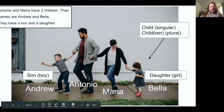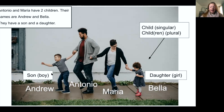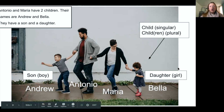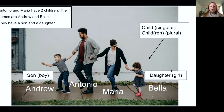Andrew is a boy, so he is their son. Bella is a girl, so she is their daughter. Let's do the pronunciation one more time: child, children, son, daughter, boy, girl.